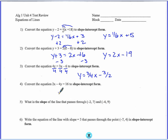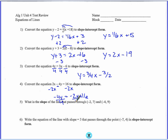Here, 2x minus 4y equals 16. The first thing I have to do is move the x. When I do that I get negative 4y — don't forget that sign — equals negative 2x plus 16. Then my last step is to divide everything by negative 4 because I have negative 4y. So y equals negative 2 divided by negative 4, which simplifies to 1 half x, and then 16 divided by negative 4 is negative 4.